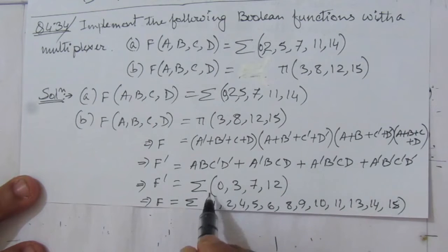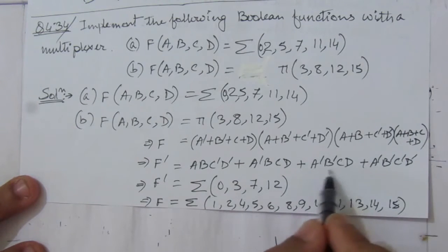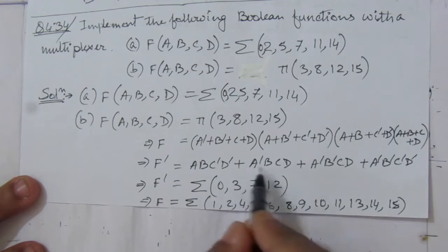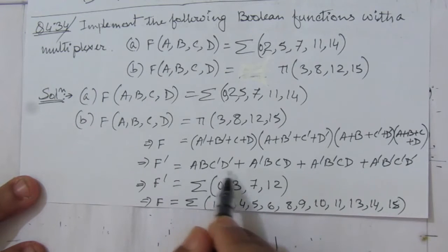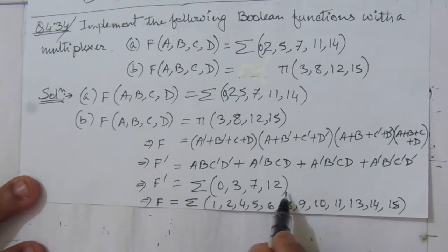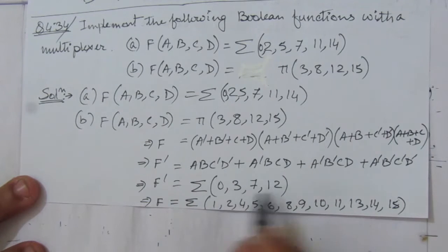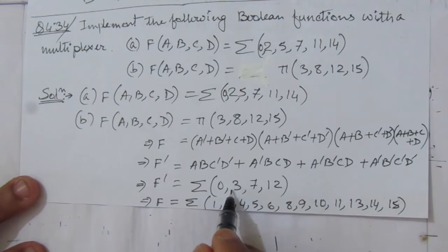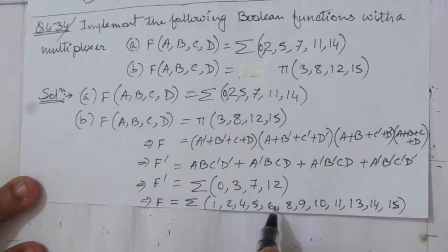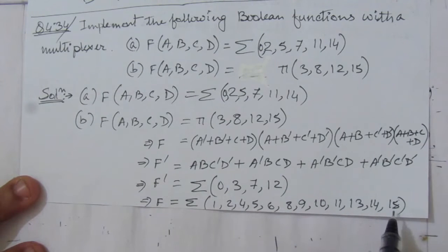Converting to sum of minterms: A̅·B̅·C̅·D̅ is minterm 0, A̅·B̅·C·D is minterm 3, A̅·B·C·D is minterm 7, and A·B·C̅·D̅ is minterm 12. So F complement = sum of minterms (0, 3, 7, 12). Therefore F equals all minterms from 0 to 15 that are not present in F complement, since it is a 4-variable function.